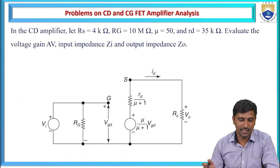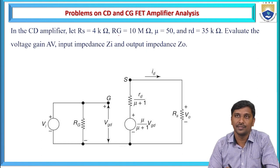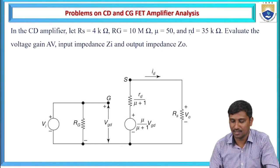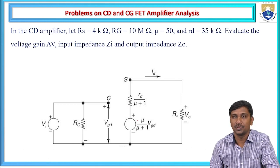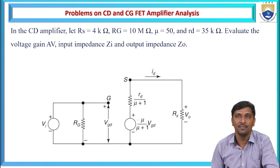First, see the problem. In the given CD amplifier, the RS value means the source resistance is 4 kilo ohms and gate resistance is 10 mega ohms, where mu is 50 meaning amplification factor is 50, and internal drain resistance or AC resistance that is rd is 35 kilo ohms. Evaluate the voltage gain, input impedance, and output impedance. The given circuit acts as a common drain amplifier, also called a source follower.